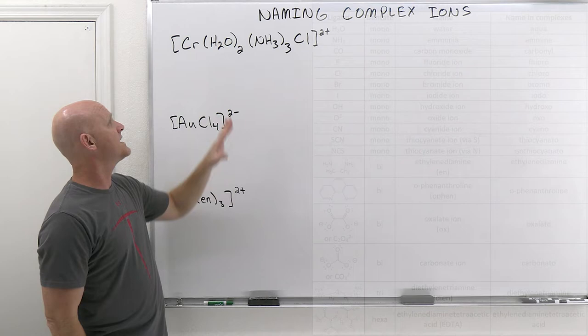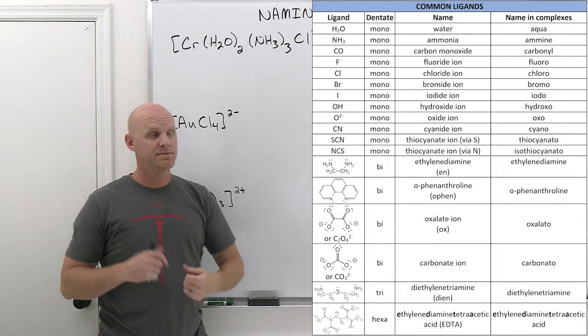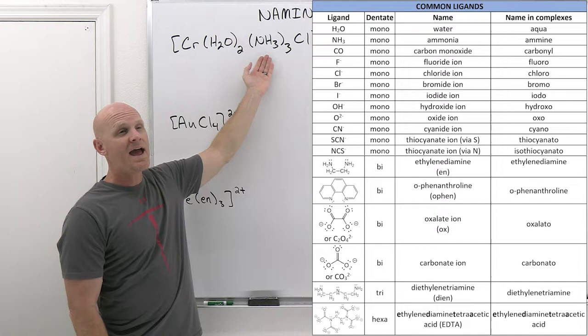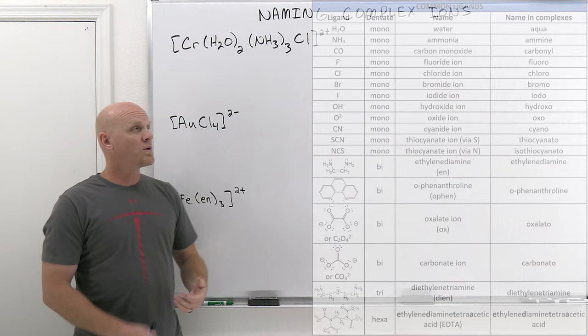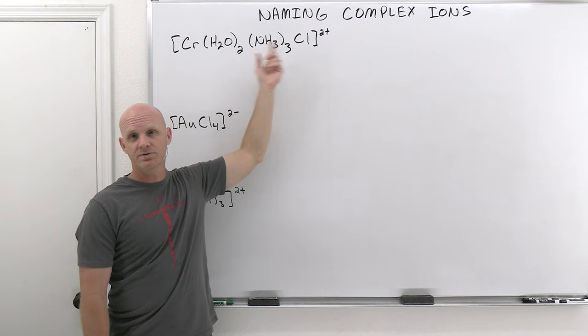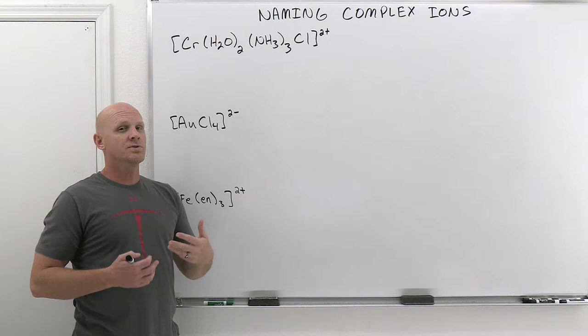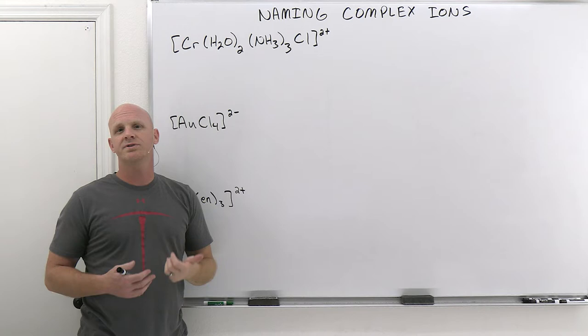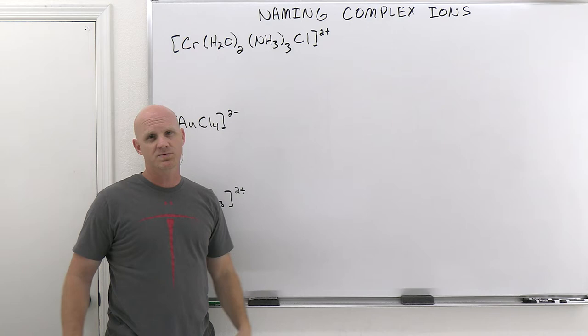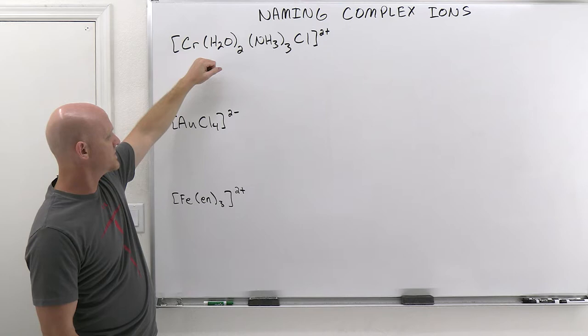We name the ligands first, in alphabetical order based on how they're named. Water is named as aqua, ammonia is named as ammine (with two M's in coordination chemistry), and Cl is chloro. You also use a numerical prefix: di for two, tri for three, tetra for four, penta for five, hexa for six. If there's only one, you use no prefix whatsoever.